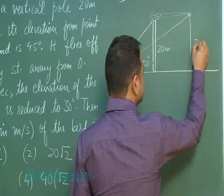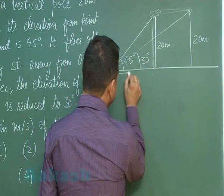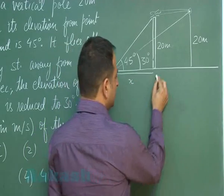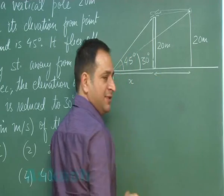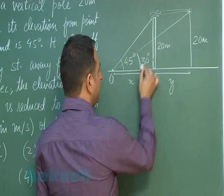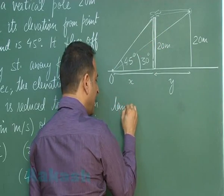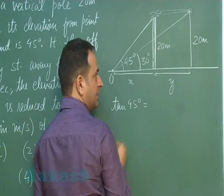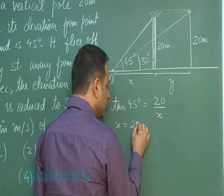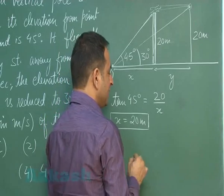This height can again be taken as 20 meters. Assuming the distance of point O from the pole is equal to x, and the distance traveled by the bird in one second is y, we now apply simple trigonometry. In the first triangle, tan 45° equals 20 divided by x, so x equals 20 meters.